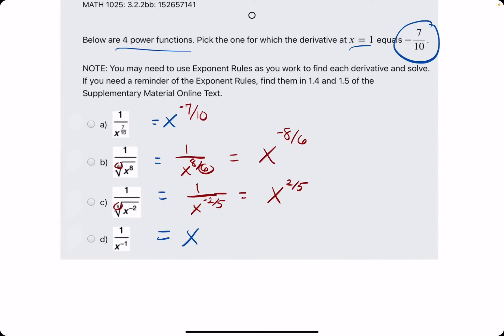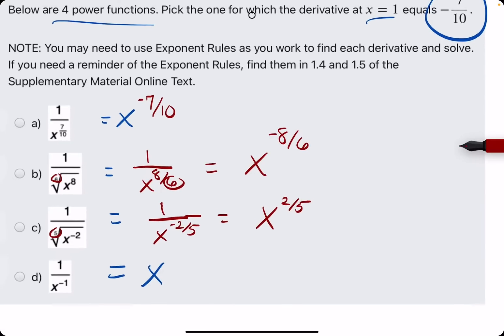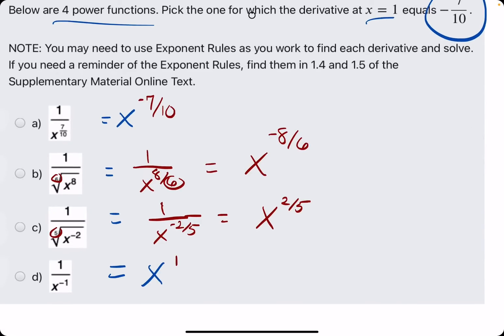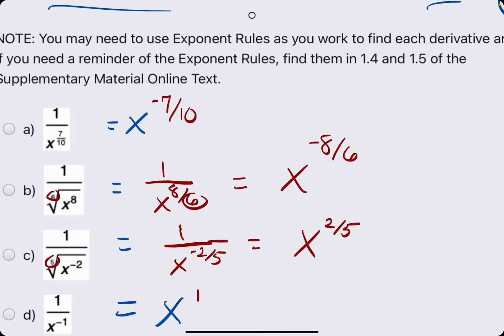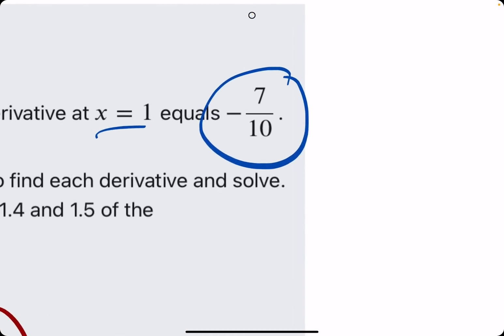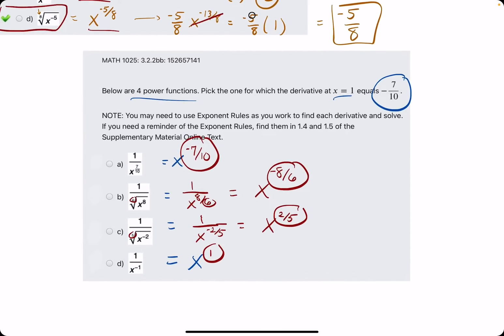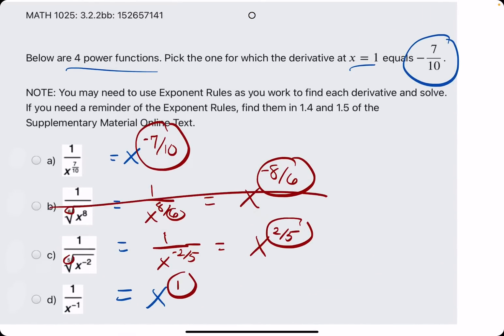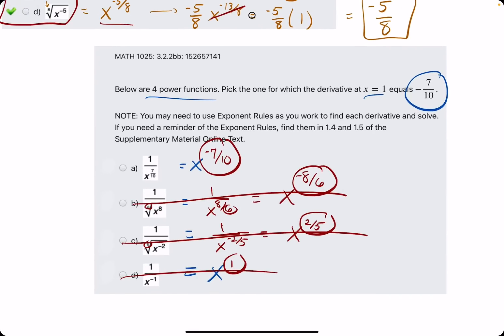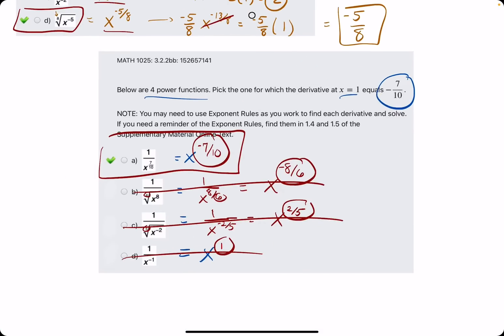And the last one, 1 over x to the negative 1 is equivalent to x to the positive 1, if we bring that x out of the denominator. So really, it's just x. So we look at these exponents, these a values, and we see which one of these a values matches our desired value, negative 7 tenths, and that is option a. So that is the shortcut for this one. It's just rewrite all the functions and see which one has the exponent that matches our answer.